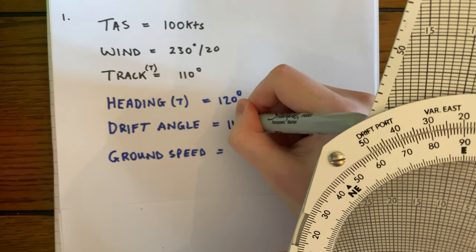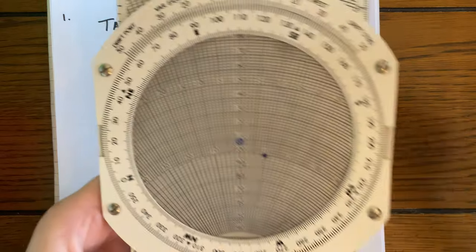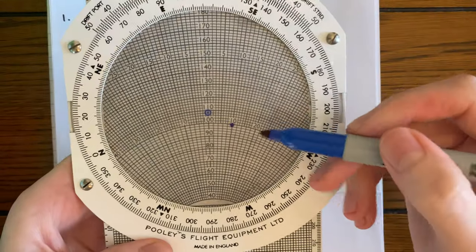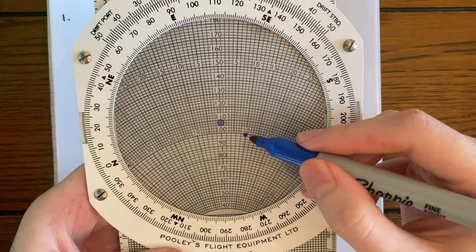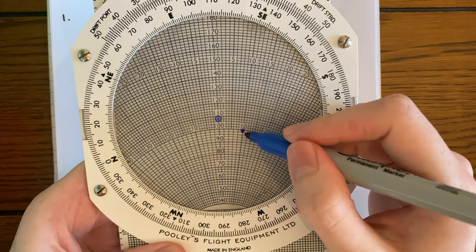So we can just read off there—our drift angle is going to be 10 degrees, and it's going to be to the left this time. So essentially for drift angle, it's going to be opposite. So if it's on the right-hand side, it's going to be left drift. And if it's on the left-hand side, it's going to be right drift.